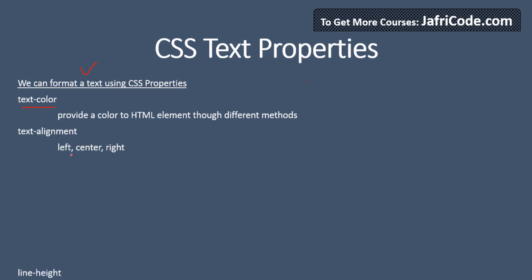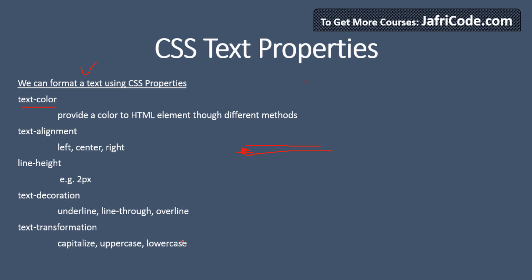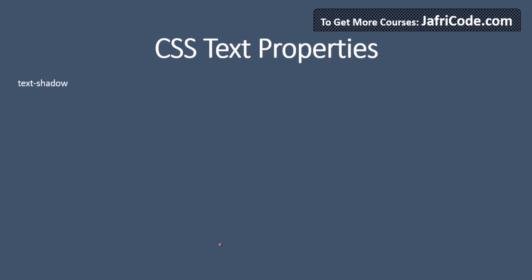Another property is text alignment — you can set left, center, or right. There is also line height: if there are two lines you can set a distance or height between them using pixel values. There is text decoration for underline, line-through, or overline. Text transform lets you set text to capitalized, uppercase, or lowercase.